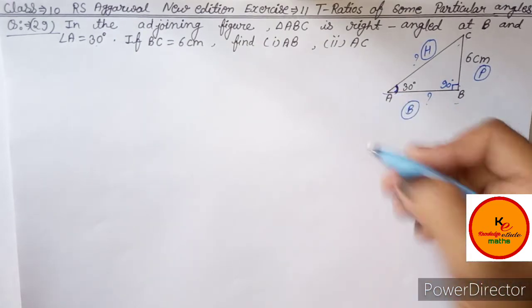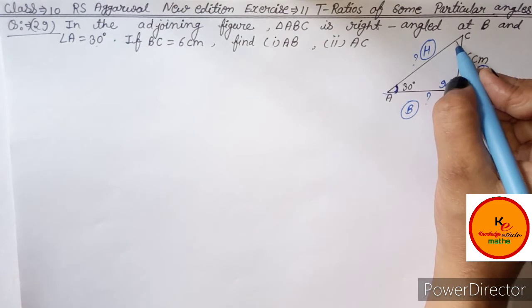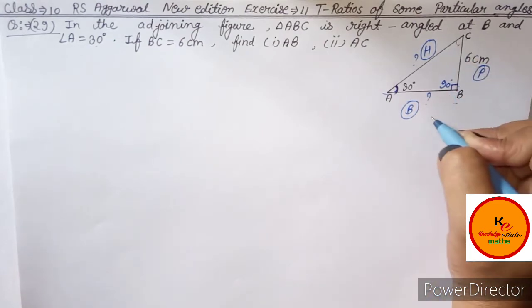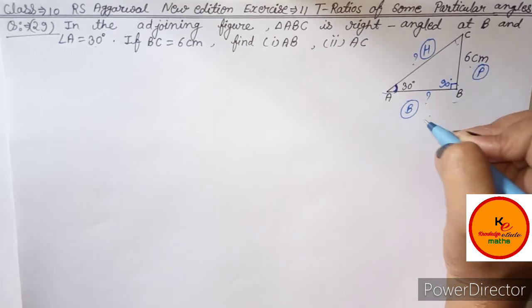By the way, suppose if in this question the 30 degree was given here, then this would become perpendicular and this would become base. What I mean is base and perpendicular interchange.